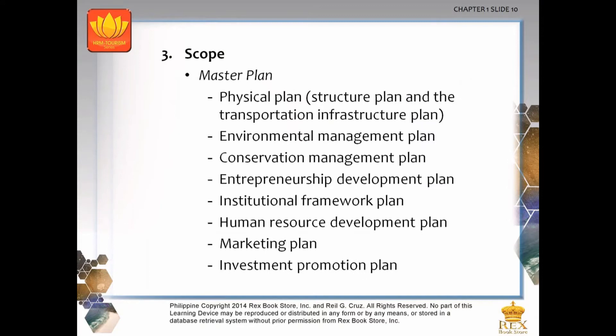A tourism plan may be comprehensive in scope or focused on one or just a few aspects of tourism planning. A comprehensive tourism plan is also known as the master plan. The master plan consists of a physical plan which includes a structure plan and a transportation infrastructure plan, an environmental management plan, a conservation plan, an entrepreneurship development plan, an institutional framework plan, a human resource development plan, a marketing plan and an investment promotion plan.